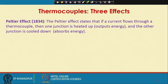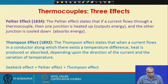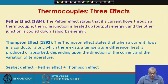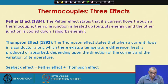Next, the Peltier effect states that if a current flows through a thermocouple, one junction is heated up — that is, it outputs energy — and the other junction is cooled down — that is, it absorbs energy. The Thompson effect states that when a current flows in a conductor along which there exists a temperature difference, heat is produced or absorbed depending on the direction of the current and the variation of temperature. We can see that the Seebeck effect is basically a sum of the Peltier effect and the Thompson effect.